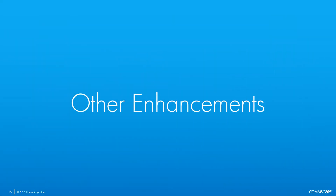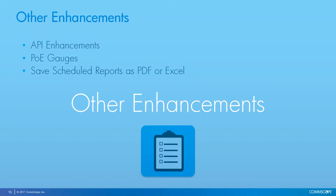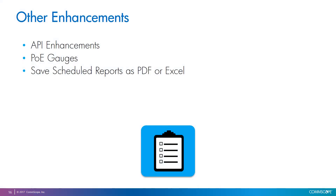Lastly, let me mention a few other enhancements included in this release. The API has now several new functions, especially around system objects, managed network equipment objects, and port details. We have also included several new PoE gauges that can be added to dashboards. And finally, you can now save scheduled reports as PDF or Excel files.